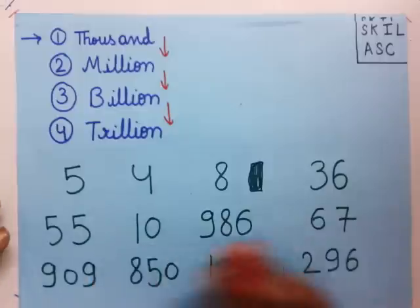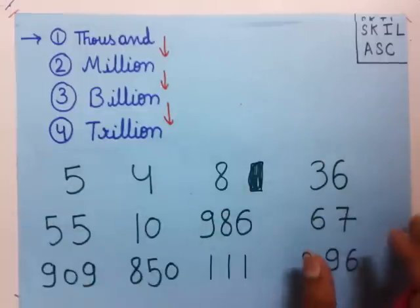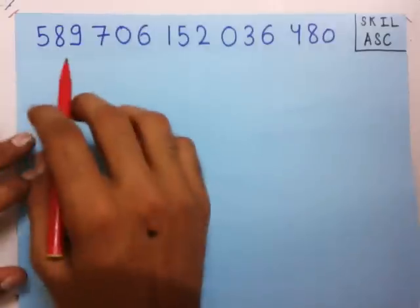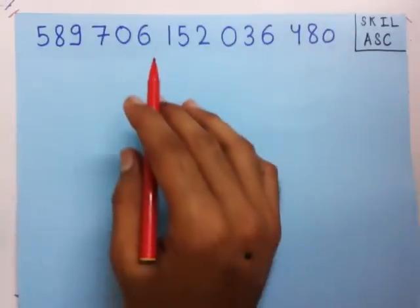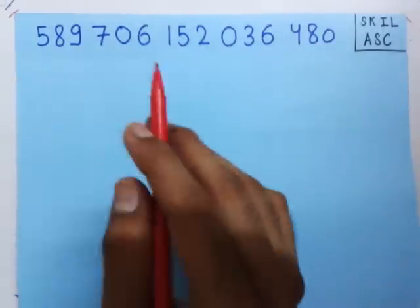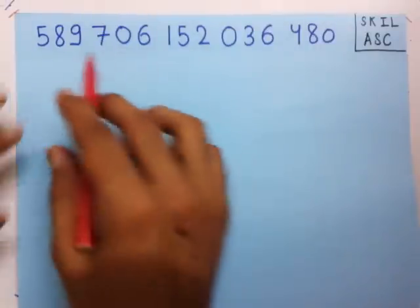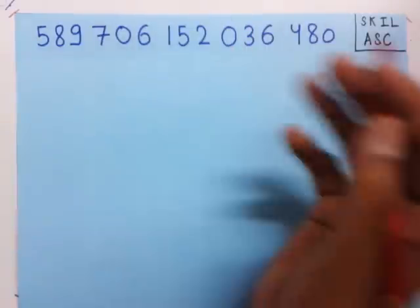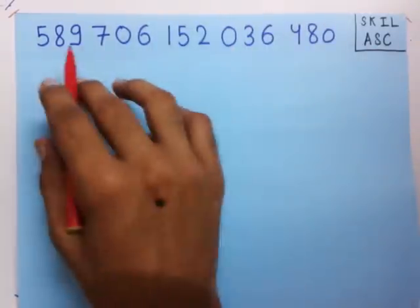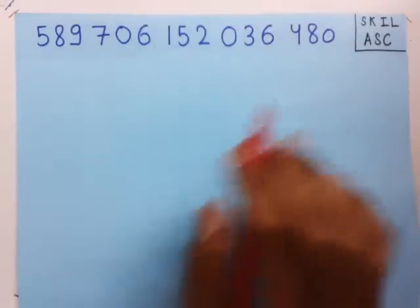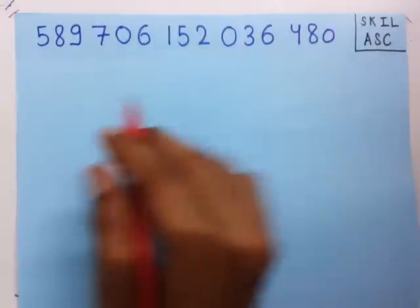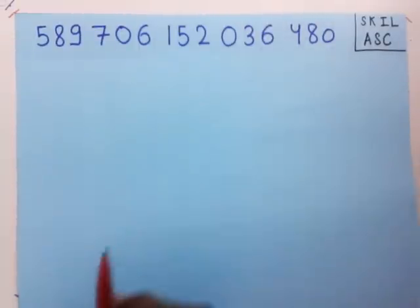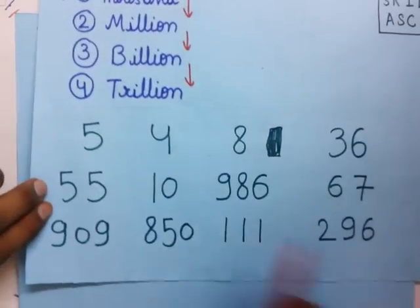Now once we know how to read small numbers, we are ready to read any number. So let us take the example of a very large number. We have taken this very large number first because it will better explain how to read any number. If I ask you to read this very large number, it looks very difficult. But we all know how to read smaller numbers.